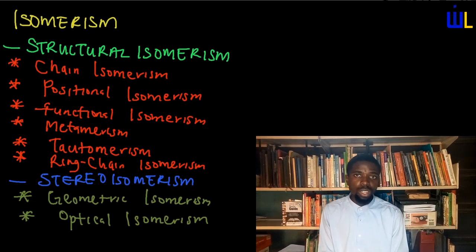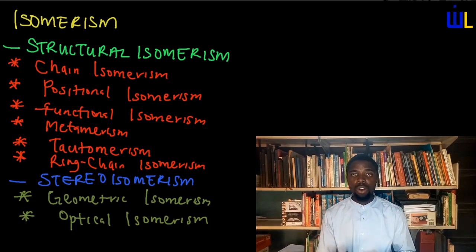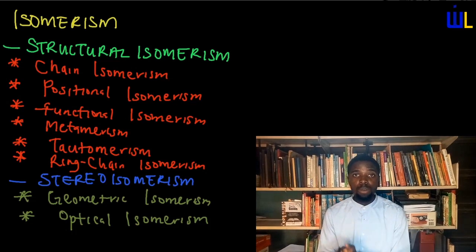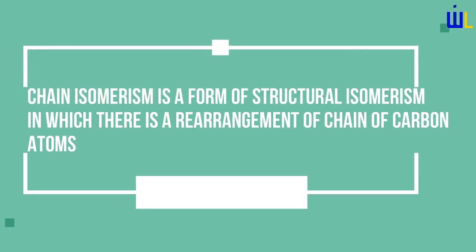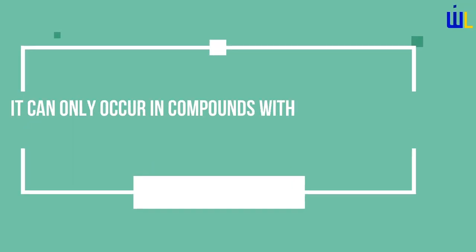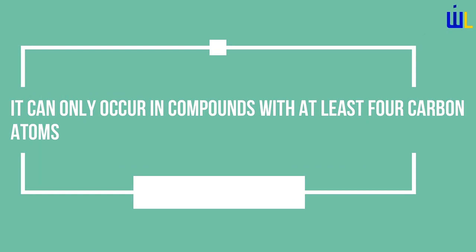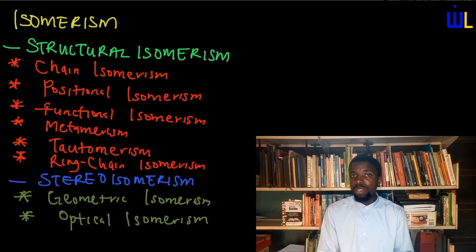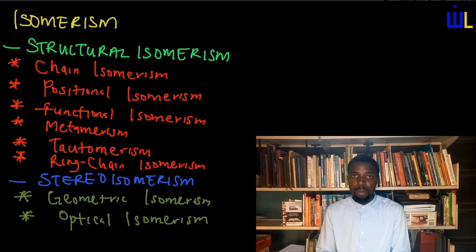Let's discuss them in detail. What is chain isomerism? In discussing chain isomerism, one thing you always have in mind is the carbon chain — the chain of carbon atoms. Chain isomerism is a form of structural isomerism in which there is a rearrangement of the chain of carbon atoms. It can only occur in compounds which have at least 4 carbon atoms. If the number of carbon atoms is less than 4, chain isomerism cannot occur. Note: I specifically said chain isomerism does not occur in compounds with less than 4 carbon atoms.